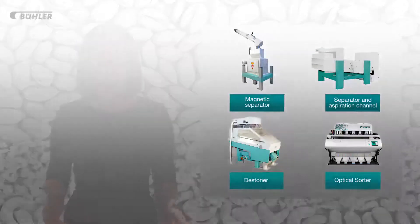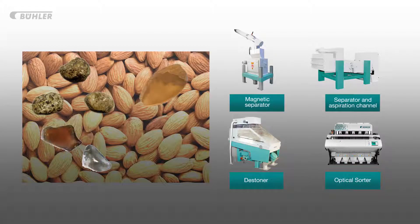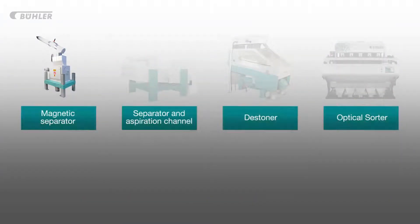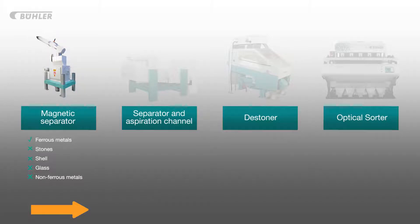Let's imagine that we are processing natural almonds which contain stones from the field and harvest stage, shell from the actual product itself, glass from the transport stage and metal from the processing stage. The natural almonds containing the foreign bodies enter the processing line and are then fed through the magnetic separator which removes any items that have magnetic properties. Any ferrous metals present amongst the good nut product will be removed, but the stones, shell, glass and non-ferrous metals will continue along the process line since they don't have magnetic properties and thus cannot be removed.